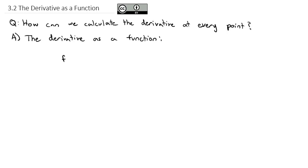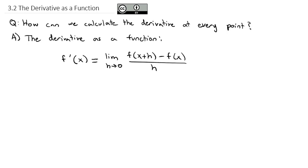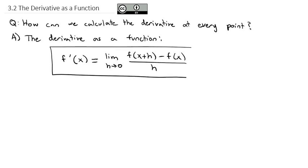That function is going to be written as f prime of x — that means it's the derivative of f at x. f prime of x is equal to the limit as h goes to 0, using the definition generalized to f of x plus h minus f of x all over h. This equation lets us calculate the derivative as a function for all points x. We just plug in any x value to get the derivative at that point.